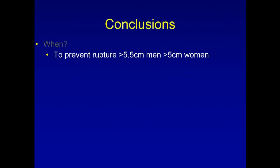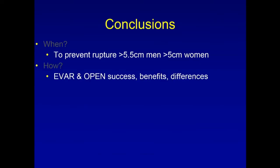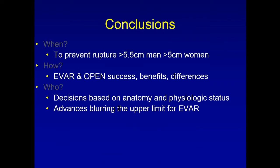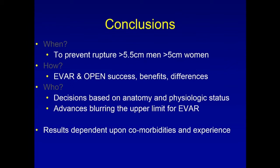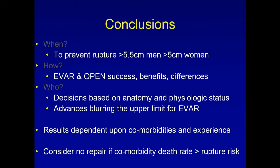So we know what to do to prevent rupture. In conclusion, we look at EVAR and open successes, benefits, and differences — the who, the decisions based on anatomy and physiologic status. Although we are advancing the upper limits of EVAR and must continue pushing in that direction, we still need to maintain good open skills and know who is a good candidate for open. Results are dependent on comorbidities and experience. And last but not least, consider no repair for those whose comorbidity and death rate exceeds the rupture risk.